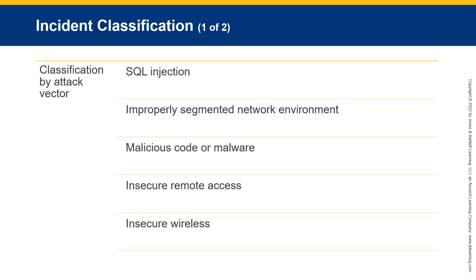An improperly segmented network environment: related attacks rely on the lack of partitioning or isolating high-risk assets on their own network segments. For example, in a flat network, all portions of the network are accessible from anywhere. A breach in one part of the network exposes the entire network to potential access.